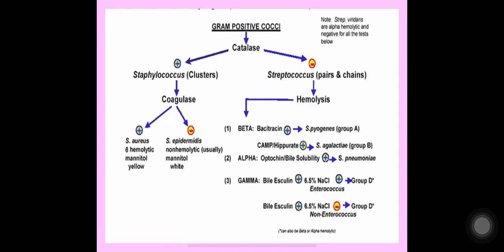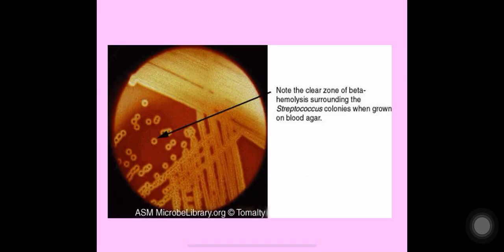Staphylococci are coagulase-positive or negative and catalase-positive, while streptococci are catalase-negative. Based on hemolysis, streptococci can be divided into various groups. Note the clear zone of beta hemolysis surrounding the streptococcus colonies when grown on blood agar — that is beta hemolytic streptococcus.